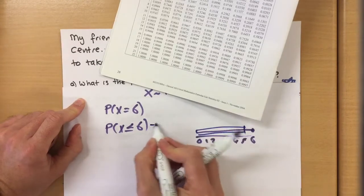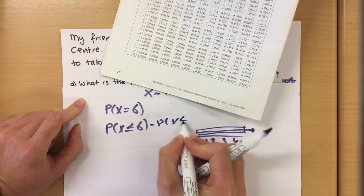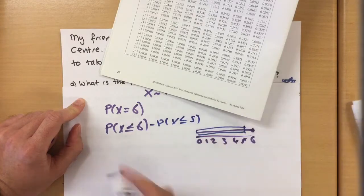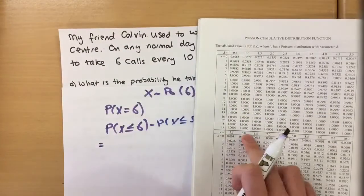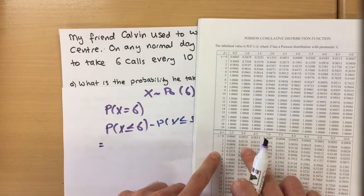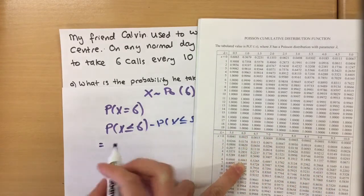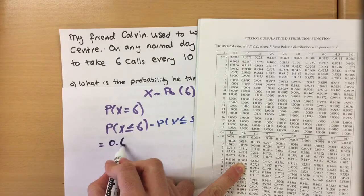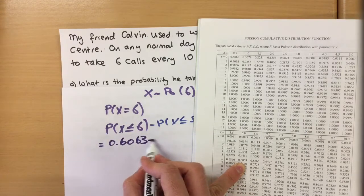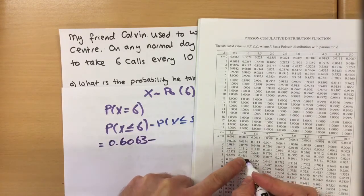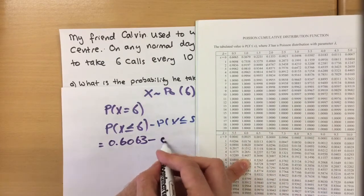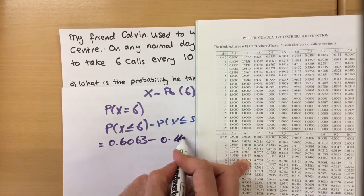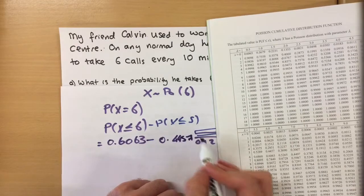And you take away from that five and lower. So we'll take away the probability X is less than or equal to five, which gives us from our tables, so I go lambda is six and looking at six is 0.6063.